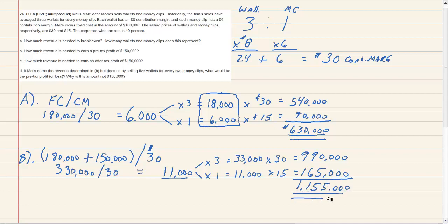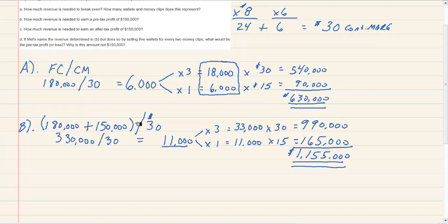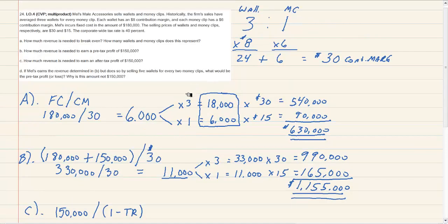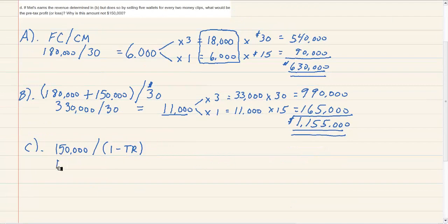The answer for part B — how much revenue is needed to earn a pre-tax profit of $150,000 — is $1,155,000. Part C wants the revenue needed to achieve an after-tax profit of $150,000. We convert that after-tax profit to a pre-tax figure by dividing by (1 minus the tax rate): $150,000 divided by 60% equals $250,000 pre-tax profit required.